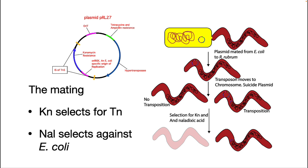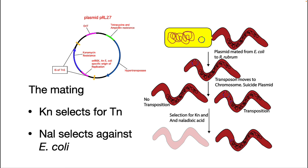Here is an example of a mutation protocol we use in Microbio 527 to cause mutations in a photosynthetic bacterium called Rhodospirillum rubrum. A special E. coli strain that has the tra functions in its chromosome and PRL27 is mixed with Rhodospirillum rubrum. While these two strains are together, the plasmid is mating over to R. rubrum. After mating, the mixture is plated onto kanamycin plus nalidixic acid plates. The nalidixic acid antibiotic selects against the E. coli, and because of the kanamycin, only R. rubrum that have the transposon inserted into its chromosome will survive.